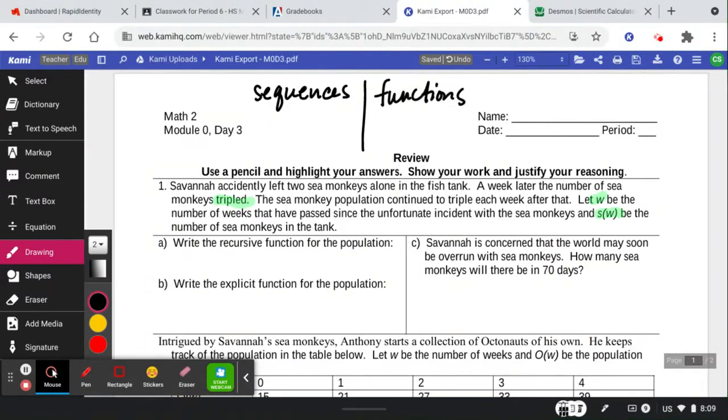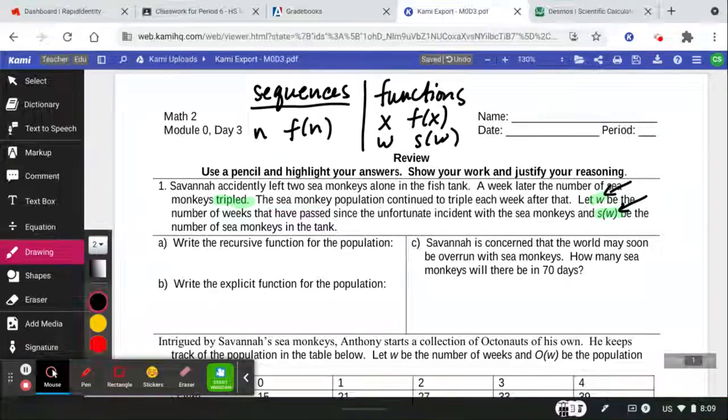These are growth models today that are talking about population. And so in sequences, we used the notation of n and f of n. In functions, we're going to convert now to the notation of x and f of x, or other names. Like today, we're going to use w and s of w, because it's asking us in this problem to use those two.